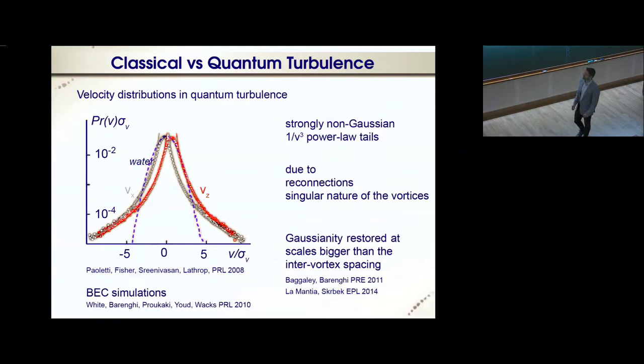This data is collected by Paoletti, Fisher, Sreenivasan, and Lathrop at the University of Maryland using a visualization technique which I will introduce later. These one over cube power law tails are due to the reconnection events and the singular nature of the vortices. However, Gaussianity is restored at a scale bigger than the inter-vortex spacing, as has been shown by Baggaley and Barenghi in simulations and by Maurer and Skrbek in experiments. Similar results have been obtained also in Bose-Einstein condensates.